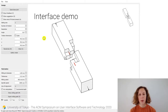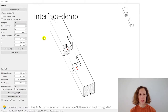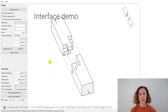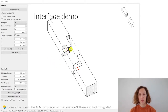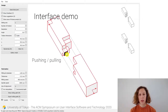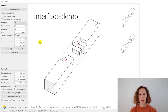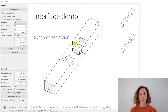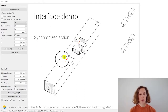Let me show a real-time demo of the proposed interface. We focus on the design of a single joint. The design space is a 3D grid of voxels, and a joint is edited by pushing and pulling on the faces like this. Notice that this action is synchronized, so when I remove a voxel here, another one is automatically added over here.